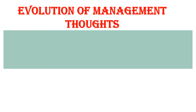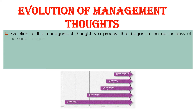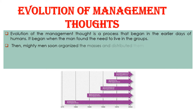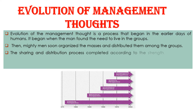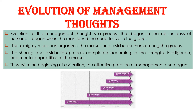Evolution of management thoughts. The evolution of management thought is a process that began in the earlier days of humans. It began when man found the need to live in groups. Mighty men soon organized the masses and distributed them among groups according to the strength, intelligence, and mental capabilities of the masses. Thus, with the beginning of civilization, the effective practice of management also began.